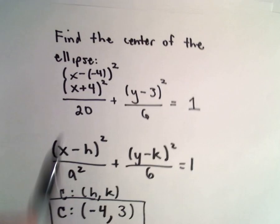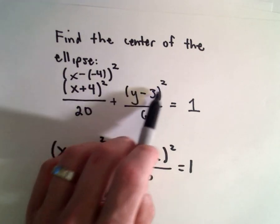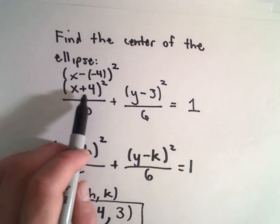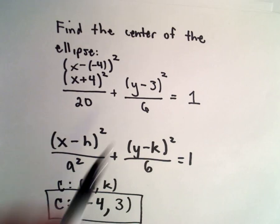So again, to pick this out, just look at the squares, the x squared term and the y squared terms. Inside the parentheses, I see a positive 4. Just flip the sign. You use negative 4.